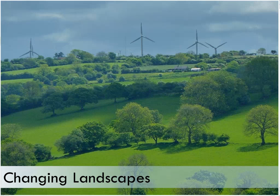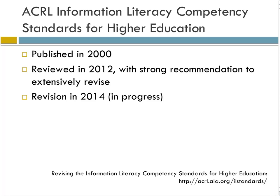Changing landscapes. Now I want to shift gears more toward the current work of the ACRL Information Literacy Competency Standards for Higher Education. The ACRL information literacy standards were first published in 2000. In 2012, the first review of the standards occurred, with a strong recommendation that they need to be extensively revised. Starting in 2013, a task force was convened and we are currently working on revisions. The revisions are tentatively scheduled to be shared in draft form sometime this spring — February, March — with ideally a final version seeking ACRL board approval at ALA Annual this summer.